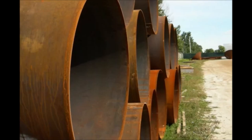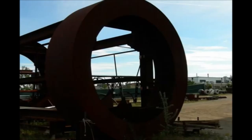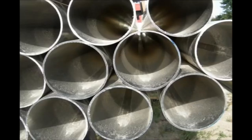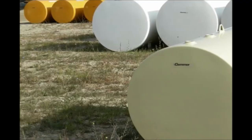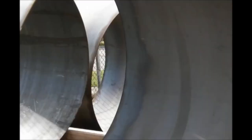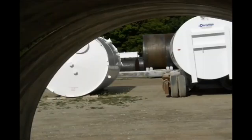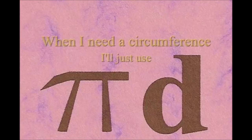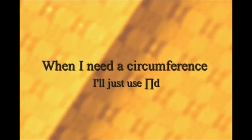Here is a circle, it knows how to get around. It has a radius from center to rim. And its diameter's a line that goes from side to side while passing through the center, now isn't that simple. Pi r squared sounds like area to me, when I need a circumference, I'll just use pi d.